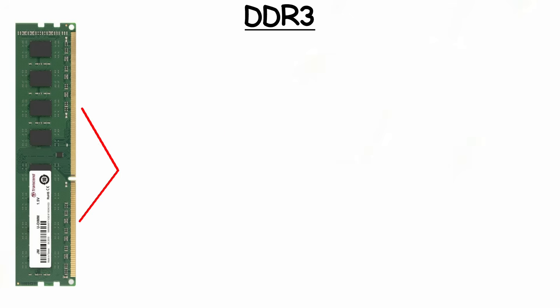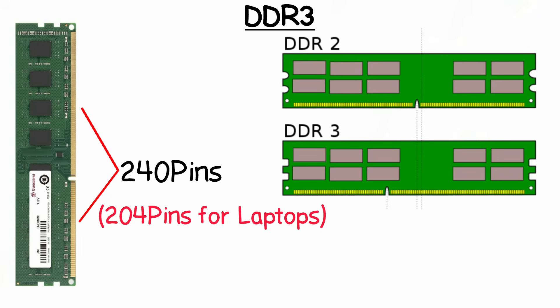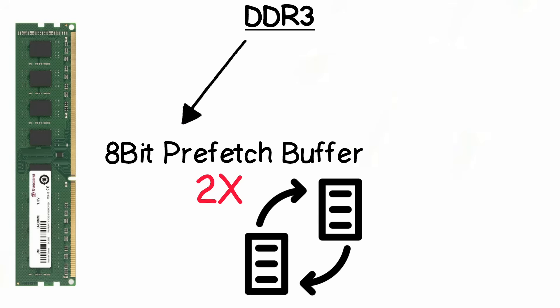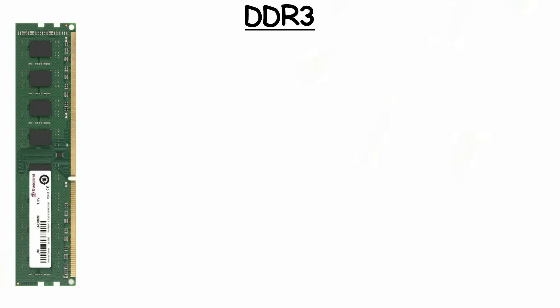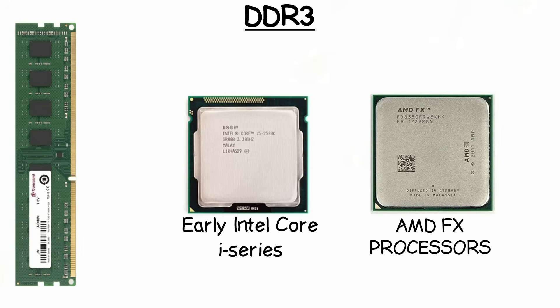The pin count for desktop modules remained at 240 pins, but the notch shifted again, making it incompatible with DDR2 slots. DDR3 also features an 8-bit prefetch buffer, doubling what DDR2 offered, allowing more data to be transferred. It was first seen with early Intel Core i-series and AMD FX processors and maxed out at 16 gigabytes per module.